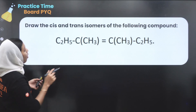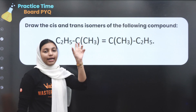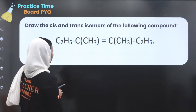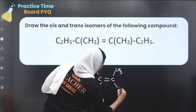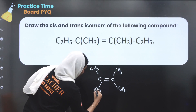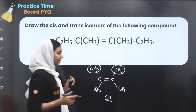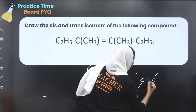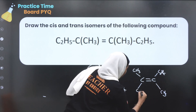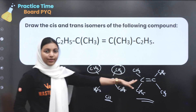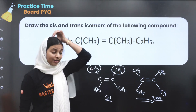Next question: draw the cis-trans isomer of the following compound. These are the two groups. This is a trans isomer form — we will take a look at the diagonal. Clear: C3, C3, C2H5, C2H5. This one is the cis isomer and this one is the trans isomer. This is a two-mark question, so we have two marks here.